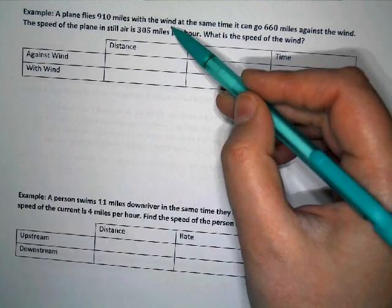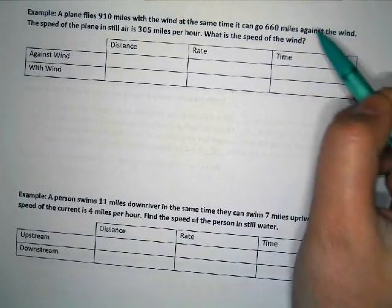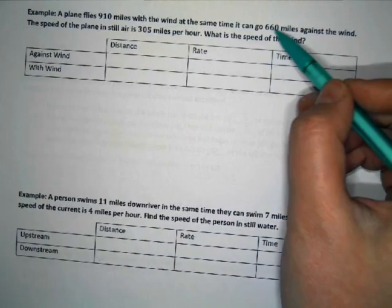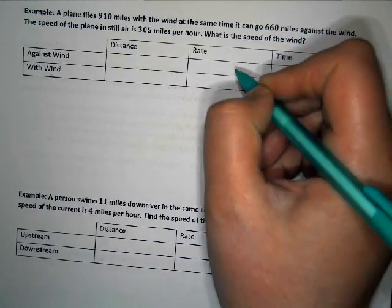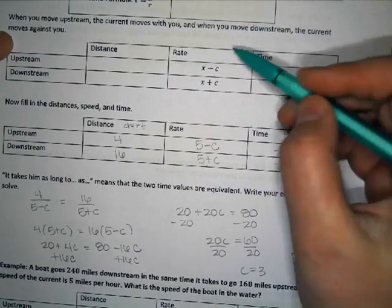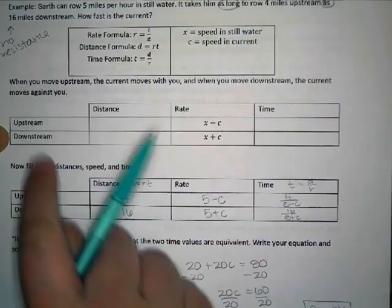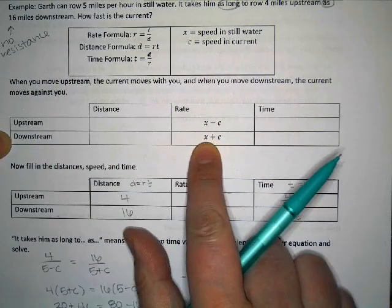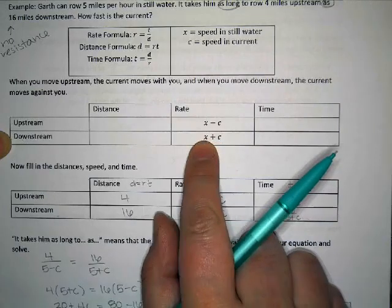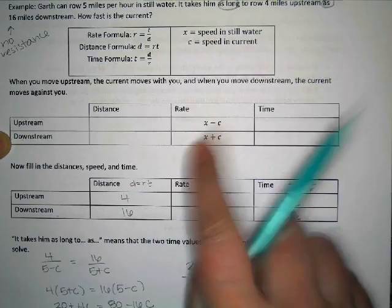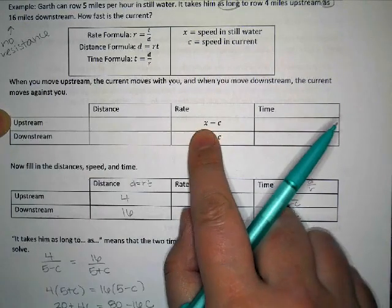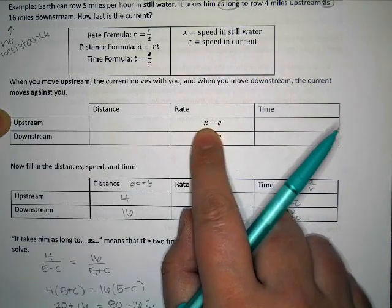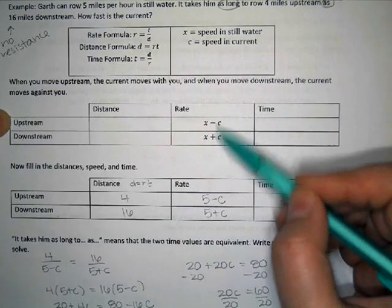So going with the wind is the same as kind of like swimming with a current, whereas against the wind would be like going against the current. And so we're going to say that if we were to compare this to the previous problems, we would say that downstream is kind of like with the wind. So you would do your speed in still air plus the wind. Upstream would be kind of like your speed in still air minus the wind. So we're going to kind of relate it to this.